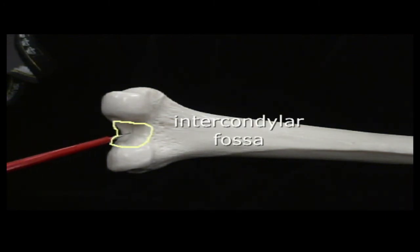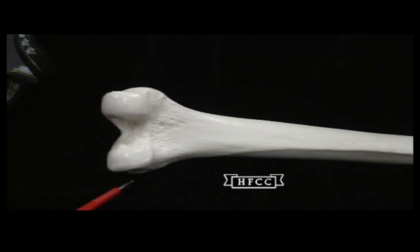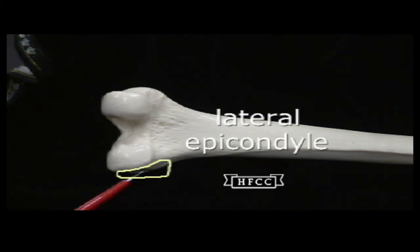And then the intercondylar fossa. This will serve for ligament attachments like the cruciate ligaments to help give the knee strength. Lateral epicondyle, again for muscle attachment. This also was shown in the anterior view. And the medial epicondyle here, which would be under the head of the femur. Down beneath the head of the femur.